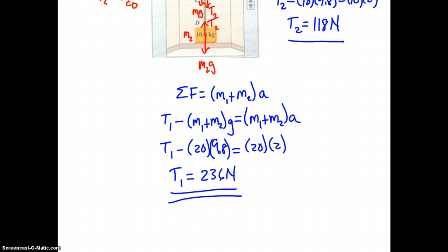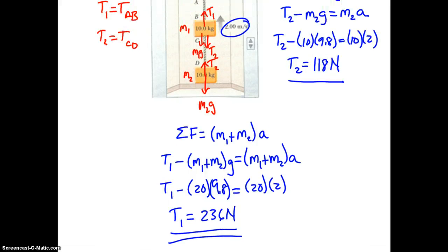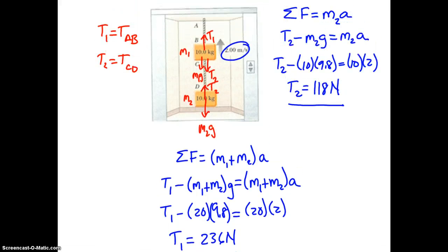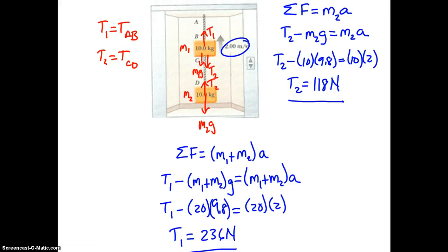Now this should make sense. As mentioned, this top rope is accelerating double the mass. That means it should have twice as much tension in it. And if you take 118 and multiply by 2, indeed you get 236.